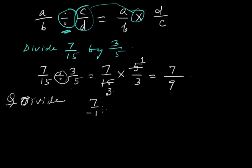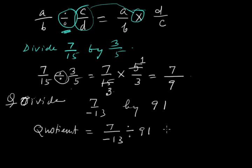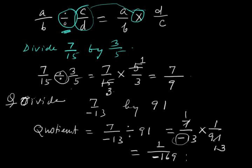Now that's another question. Divide 7/(-13) by 91. We'll write 7/(-13) times 1/91. If we divide by 7, we get 1/(-13) times 1/13. The numerator is 1, and 13 times 13 is 169. There's a minus sign, so the answer is -1/169.